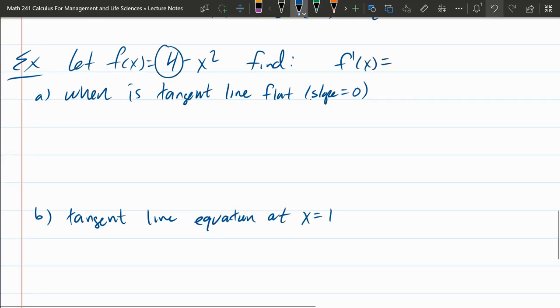So let's first start by finding what is f prime. Derivative of 4 is 0, minus derivative of x squared is 2x to the first, or just 2x. But that negative sign stays there, so our slope, or f prime, is negative 2x.